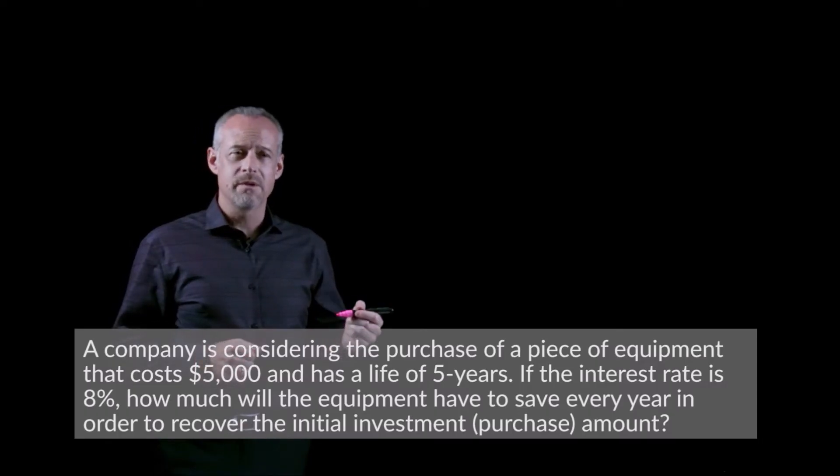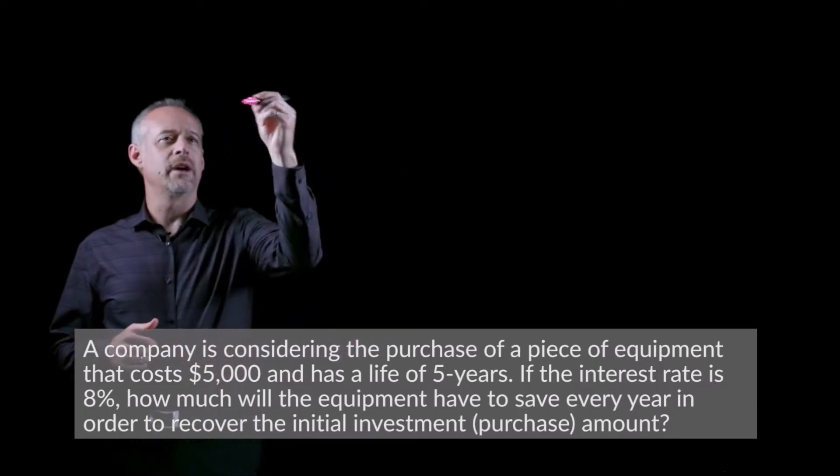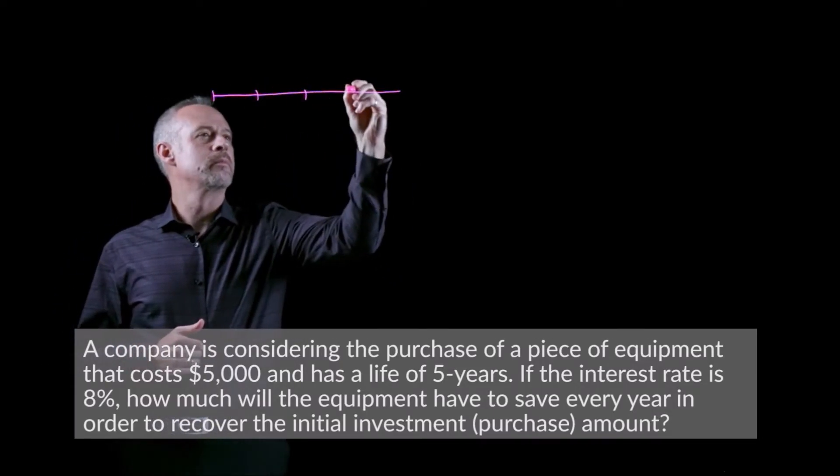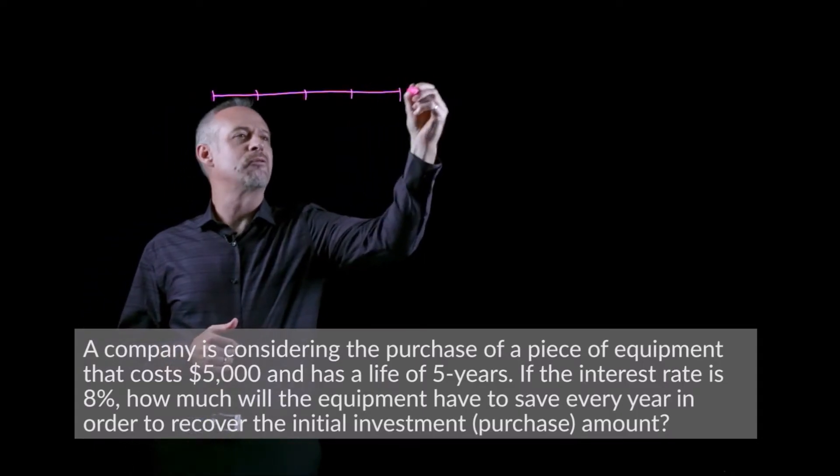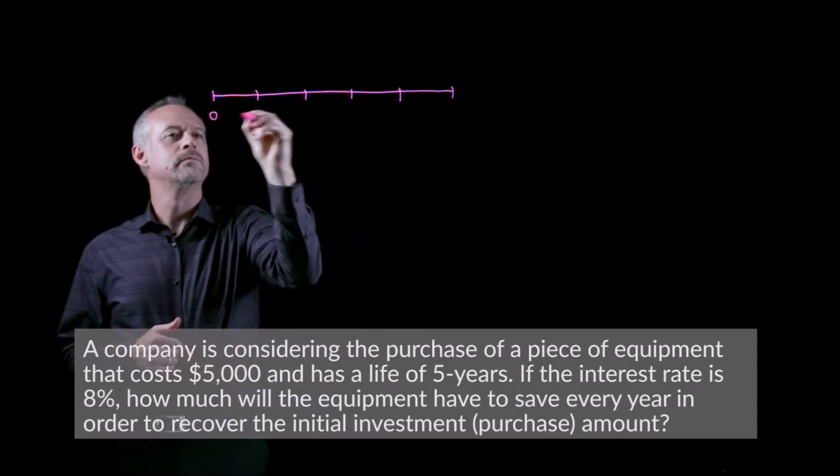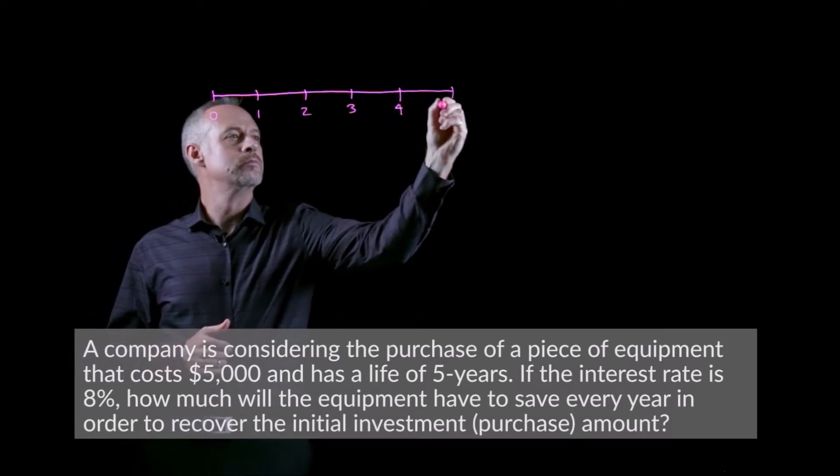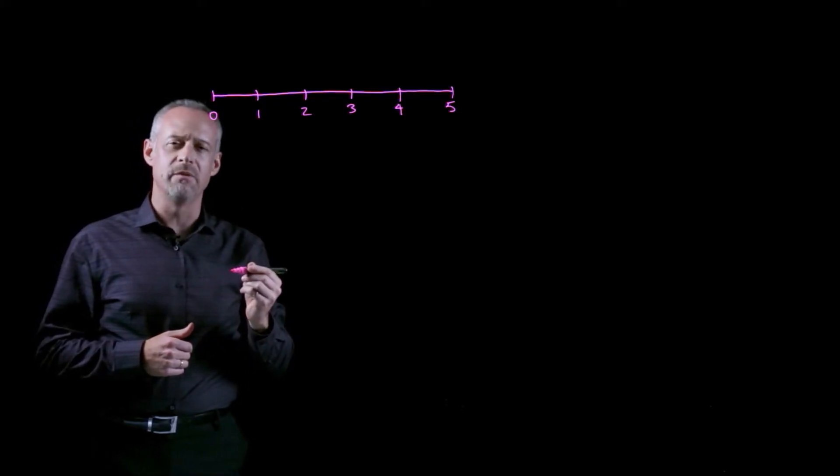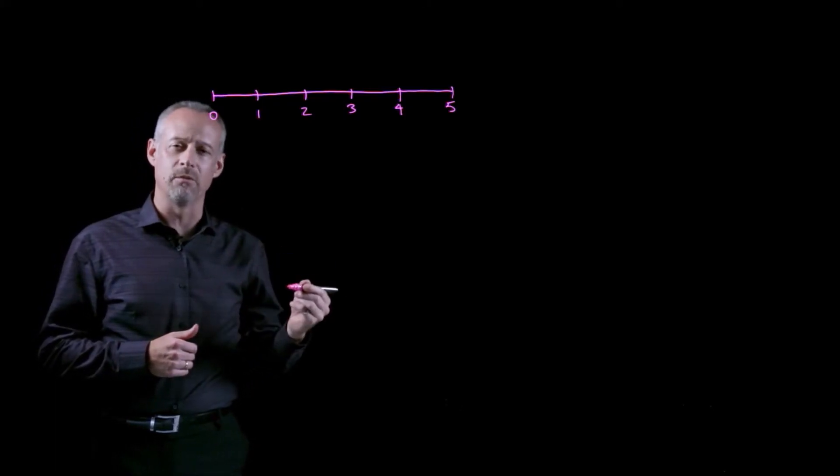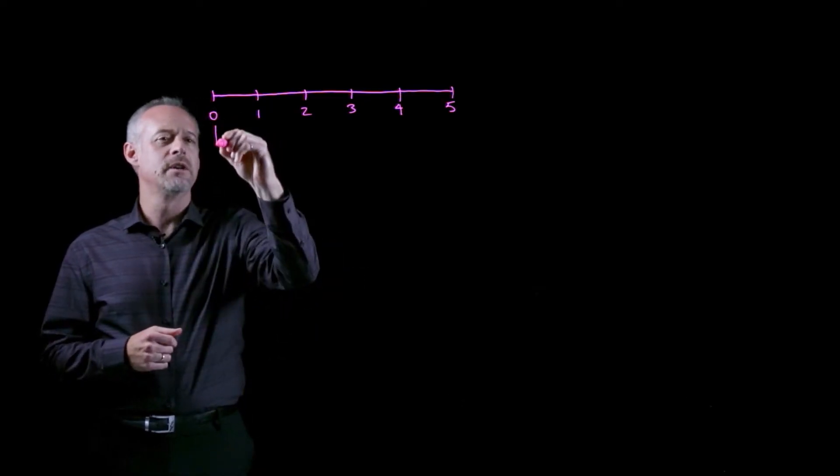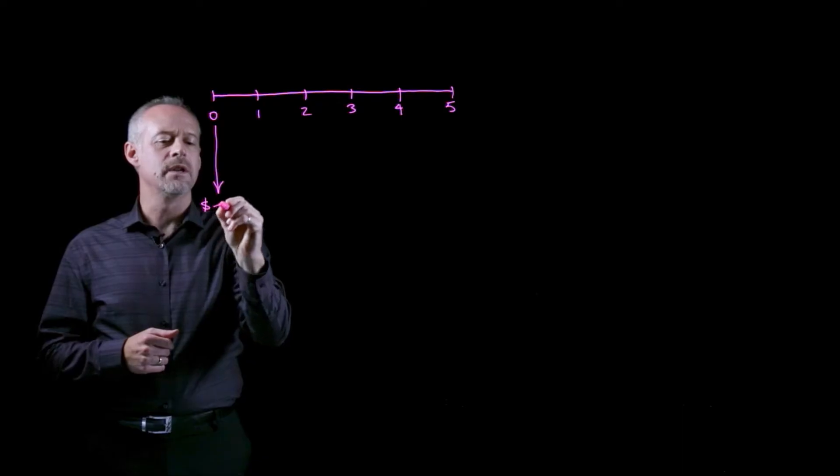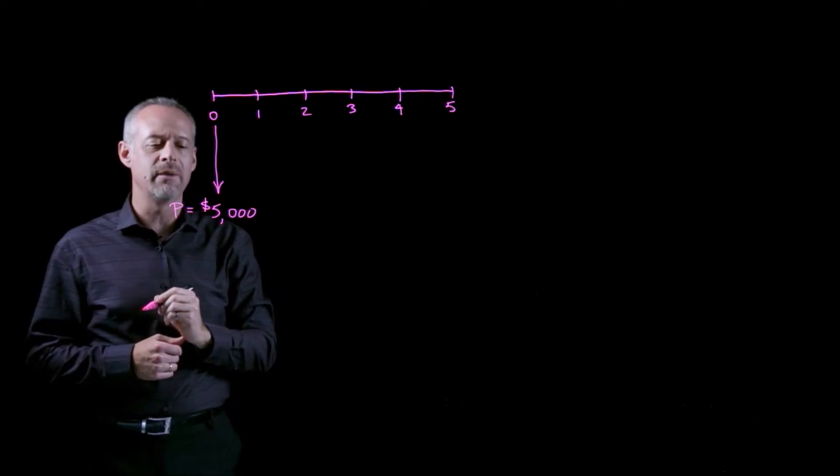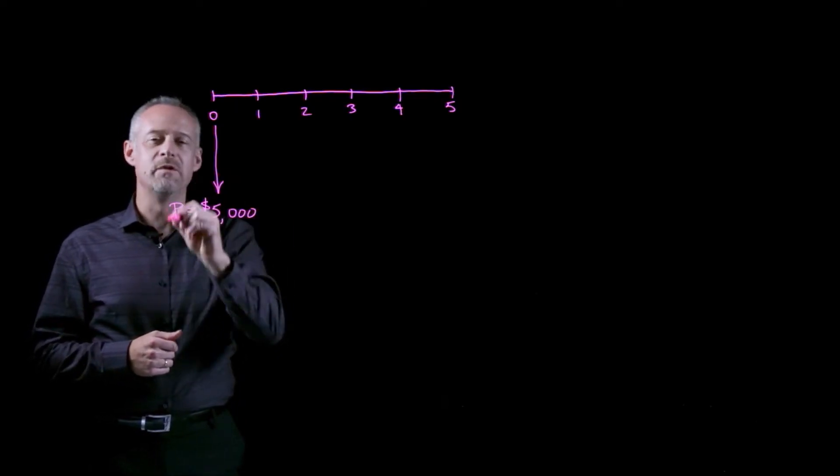So like in most problems I like to start by drawing a cash flow diagram. We know the duration of this problem is five years. We also know that the initial investment, remember investment means money coming out of our pocket, we're going to have to pay to buy this equipment. We know that the initial investment is five thousand dollars and that will be our P in the time value of money way of speaking.